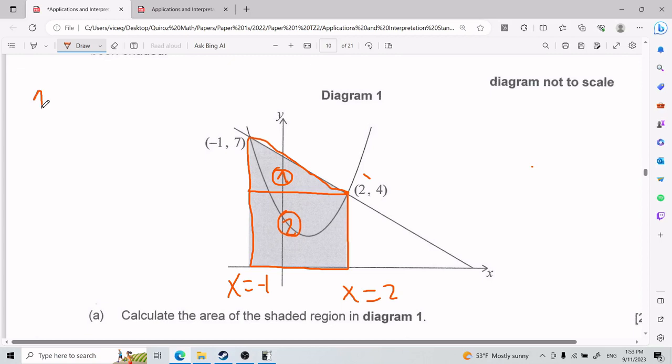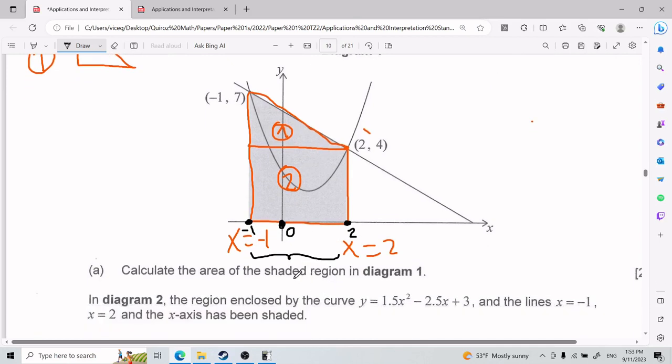If you go ahead and find the area of this first guy and the area of the second guy and add them together, you are good to go. So for the first guy, we are dealing with a triangle. Now, what are the dimensions of this triangle? Well, because we know that this right here is x equals negative 1, that this is 0, and that this is x equals 2, that means that the distance from this entire part is going to be 3.